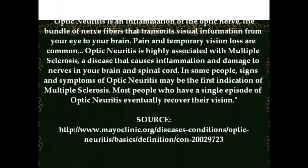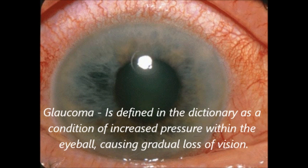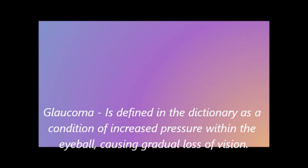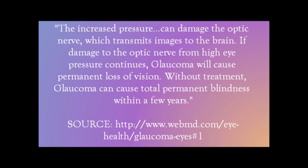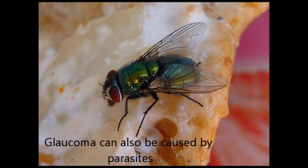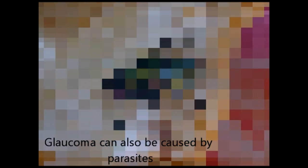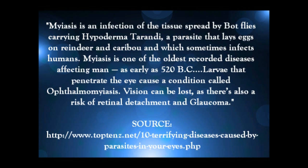Next is glaucoma. This occurs when there is a lot of pressure in the eye. It can cause you to go blind. The increased pressure can damage the optic nerve, which sends messages between the eye and the brain and tells the brain that what we are seeing are images. Glaucoma can also be caused by parasites. For example, myiasis, which is spread by bot flies carrying Hypoderma bovis, a parasite, can cause eye conditions such as retinal detachment and glaucoma.